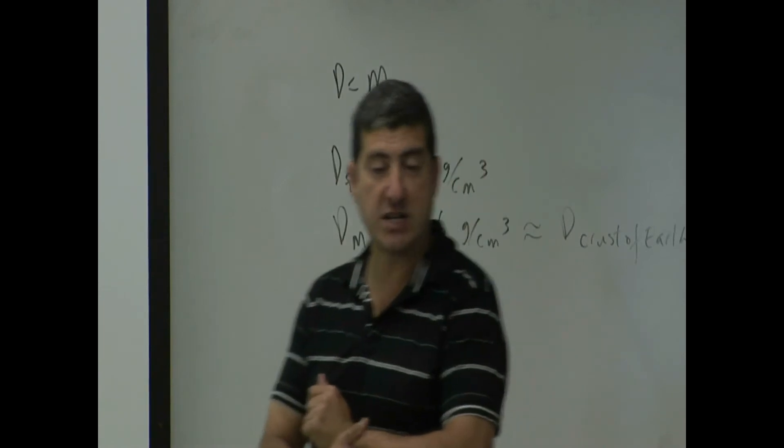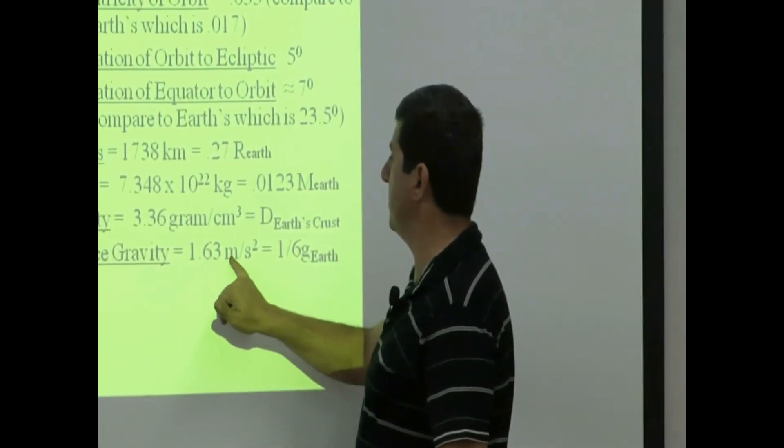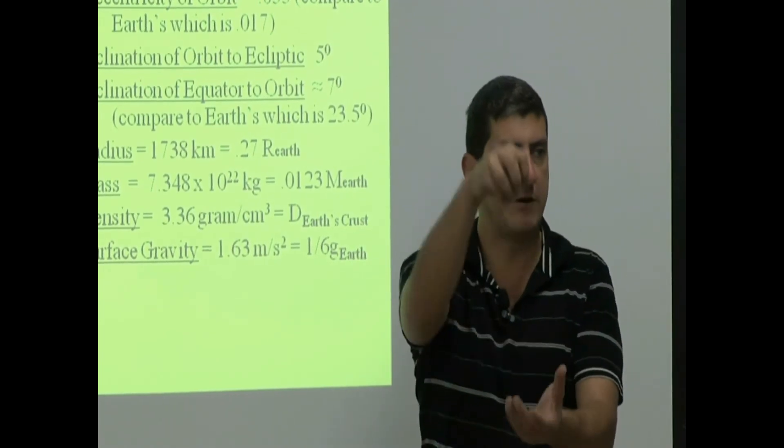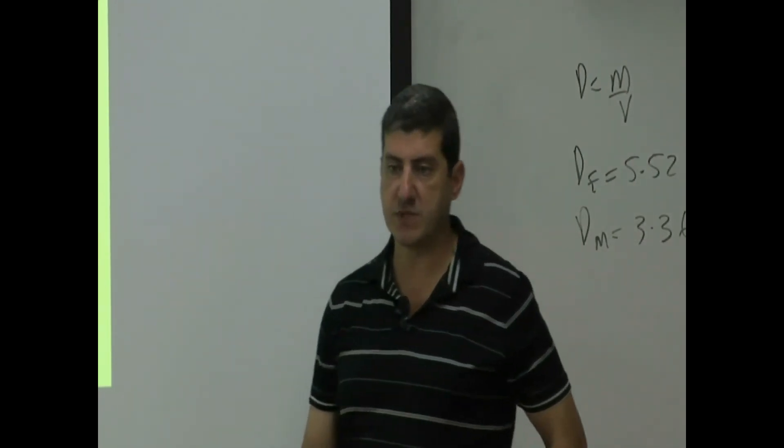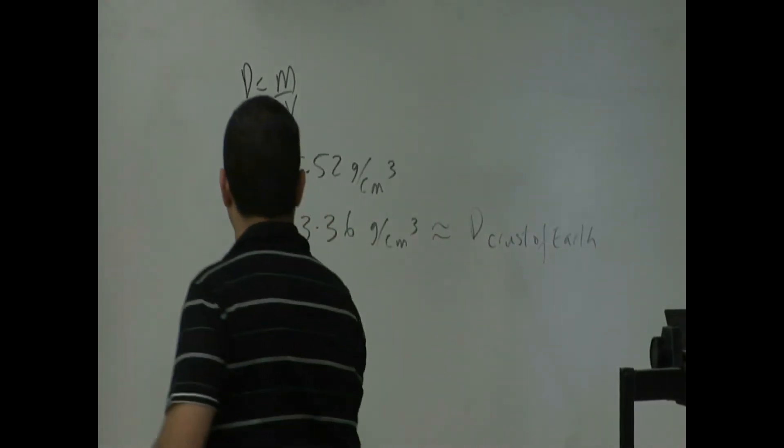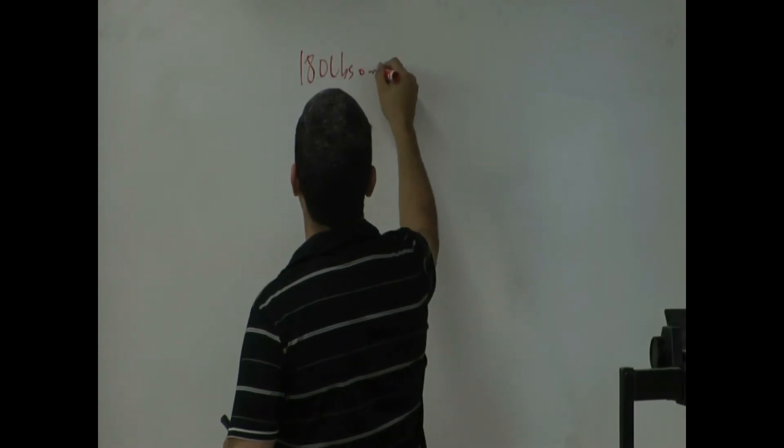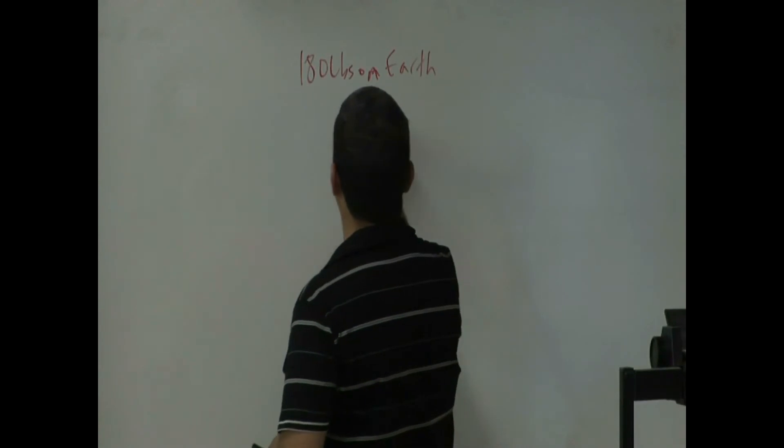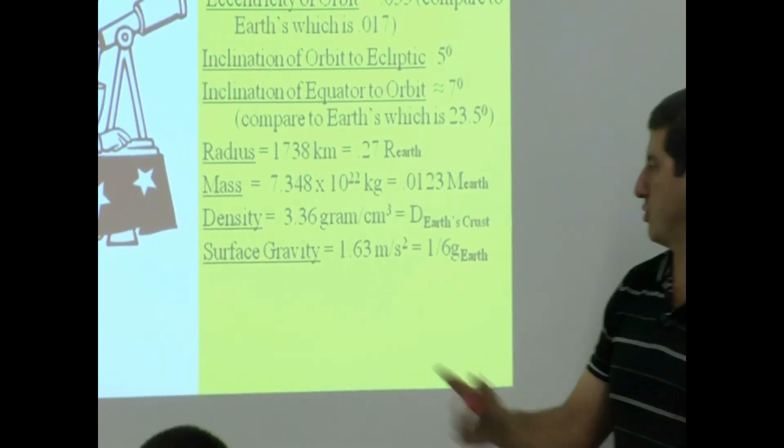Surface gravity. Remember, we talked about that. That's how much you would weigh on that planet. The surface gravity of the moon, 1.63 meters per second squared. So if you dropped an object, that's how fast it would accelerate. And then when you compare it to the Earth, it's one-sixth of Earth's gravity. So if a person weighs, I'll choose an easy number, if a person weighs 180 pounds on Earth, how much would they weigh on the moon? Do you need this number? No. Because we already know that this number is one-sixth of the gravity of the Earth. So you don't even need to use this. Just divide 180 by six.